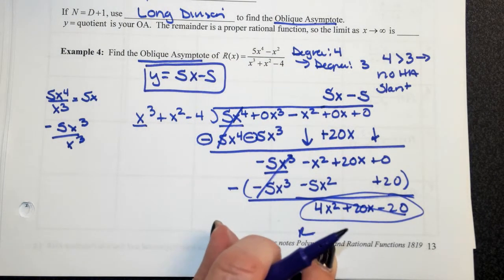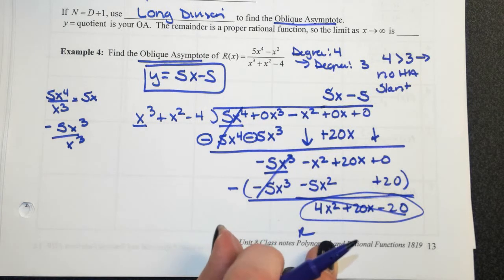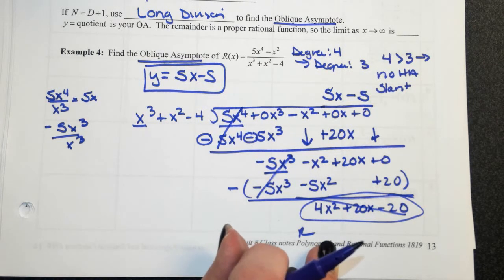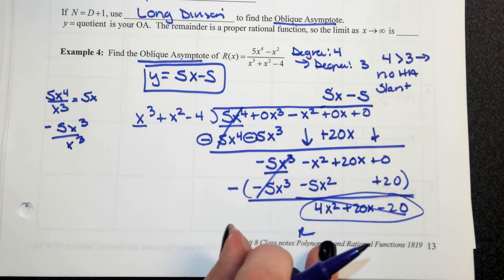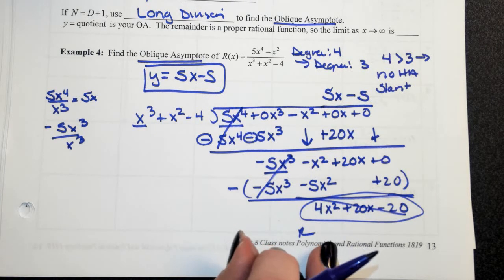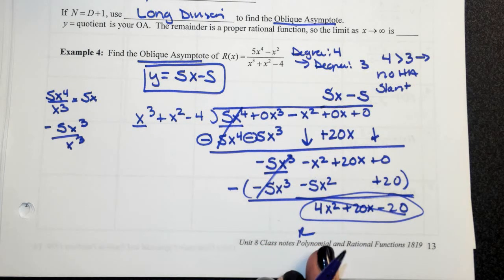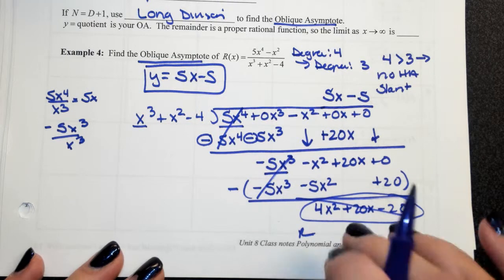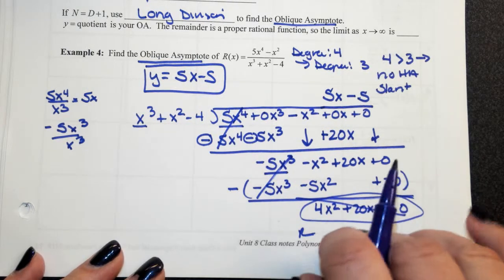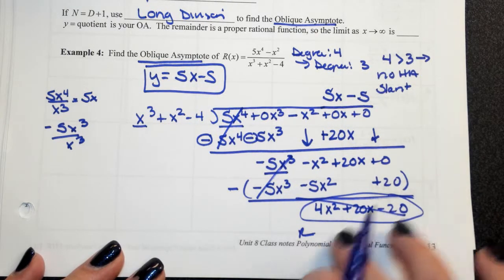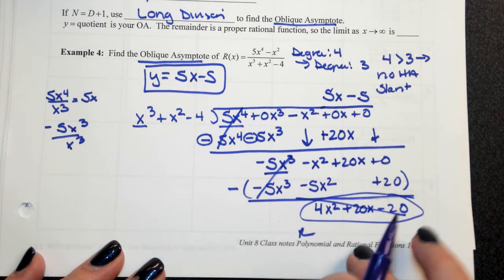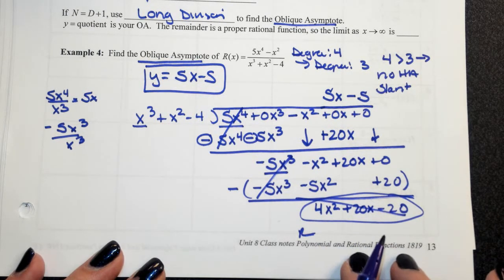Instead of having vertical or horizontal lines as asymptotes, you now have lines in the form y equals mx plus b. You can disregard the remainder; in the next unit on limits you'll see why.